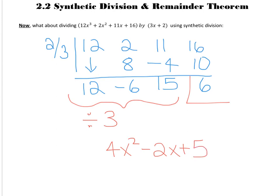Now, I just wrote it like that because we're going to set up the rest. This is our division statement. So, we found out that 12x cubed plus 2x squared plus 11x plus 16 divided by 3x plus 2 equals our quotient.